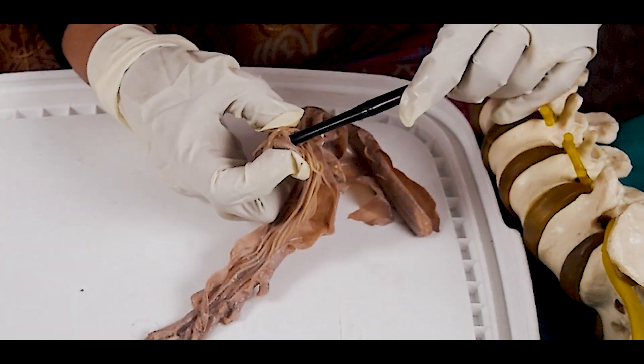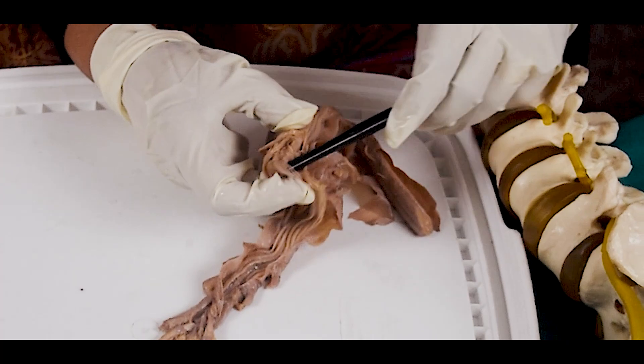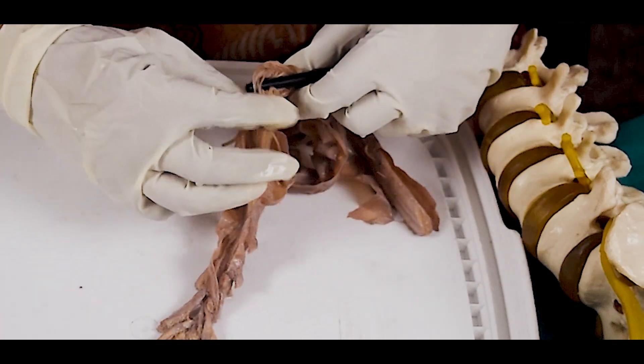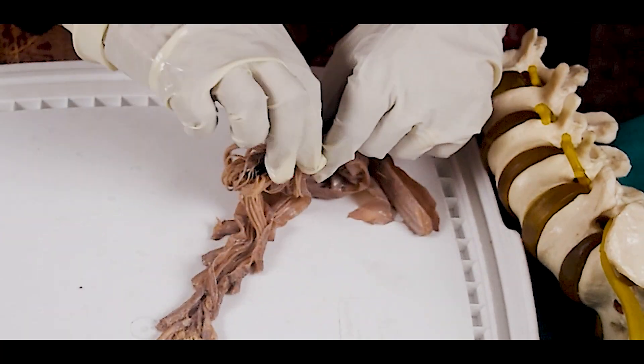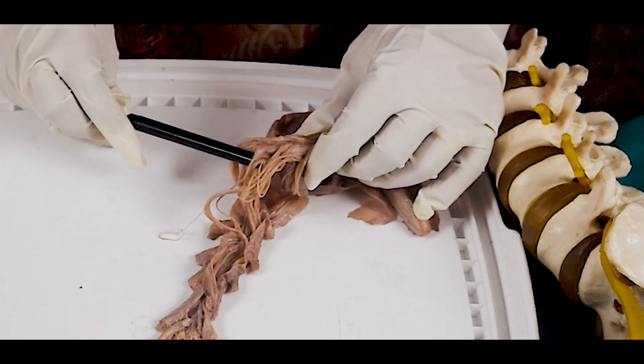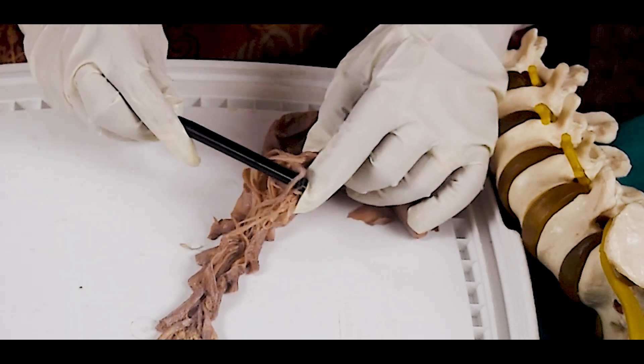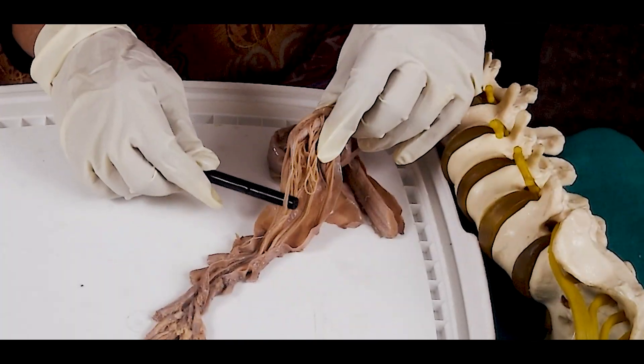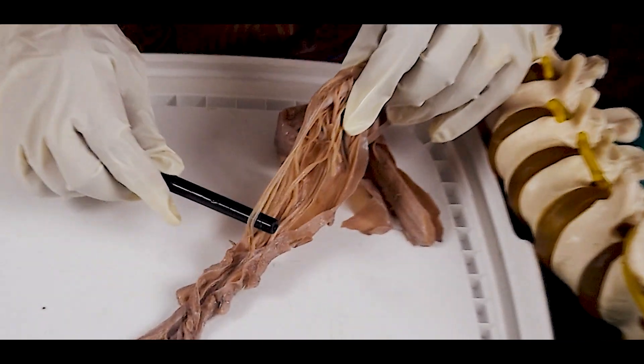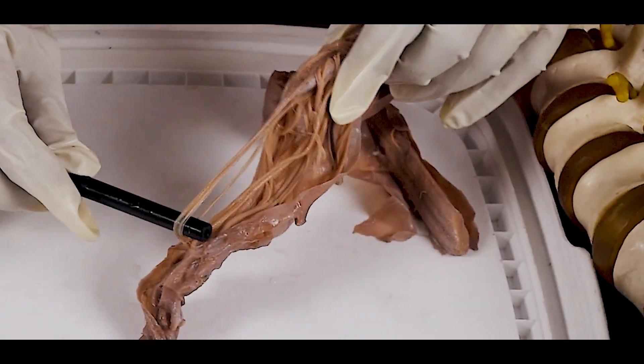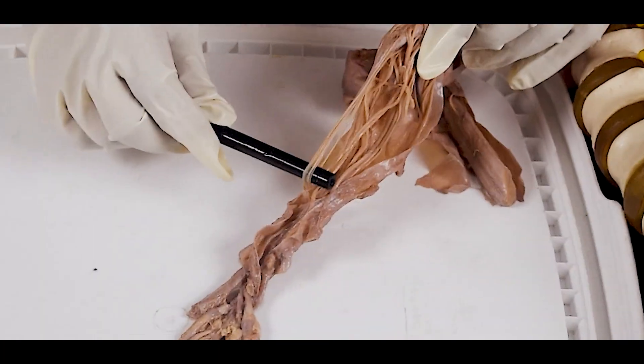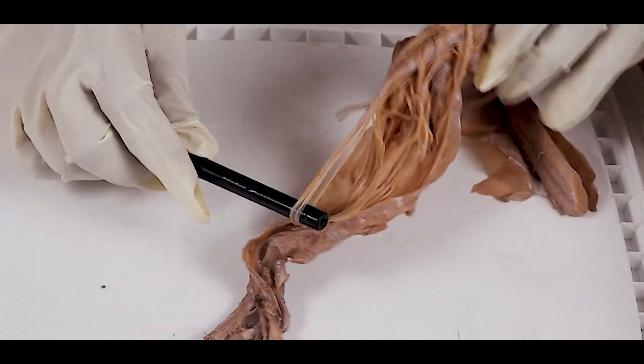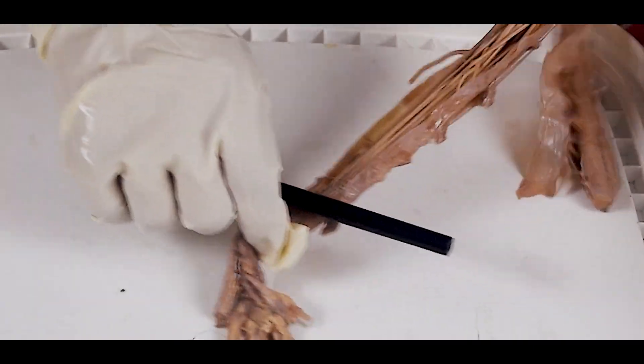And this tapered portion is known as the conus medullaris. So this is the conus medullaris, from which the filum terminale comes out. So this is the filum terminale. You see in the lower part where it ends, that is at the level of the coccyx.